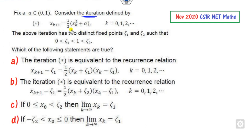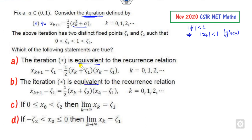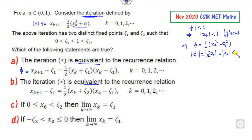The next question involves an iteration equation. Consider the given star equation — the convergence condition requires that |phi'| < 1. If phi is defined such that its derivative with respect to xk gives a term whose modulus is less than one, the condition holds. For the first option, phi = (1/2)(xk² − xi₁²), so the derivative with respect to xk is xk, and |xk| < 1, which satisfies the condition. This is the correct option.